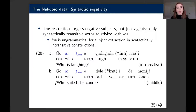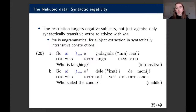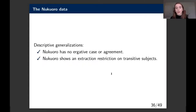The restriction only targets ergative subjects, not just agents. Only syntactically transitive verbs can relativize with 'ina.' You can't stick 'ina' on any subject extraction, such as an unergative 'who is laughing.' In Polynesian, there's a middle construction that is syntactically intransitive but notionally transitive, and even with extraction of the agent 'who sailed the canoe,' we cannot use 'ina.' It really cares about the syntax—the transitive subject, not just an agent. So Nukaworo shows syntactic ergativity, a counterexample to Dixon's generalization.